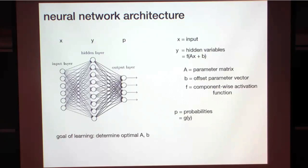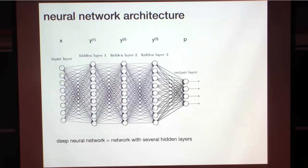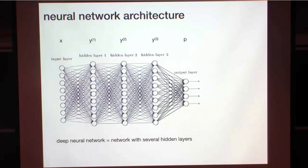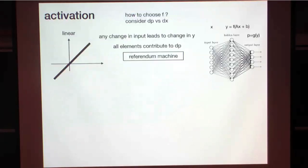That's a basic neural network — it's the building block of all deep learning. When you talk about a deep neural network, it just means that you add several hidden layers. Y1 is a function of X with some parameters and offsets, Y2 is a function of Y1 with some parameters and offsets, and so on. That's the basic architecture. So far I haven't told you anything about this function F, called the activation function.